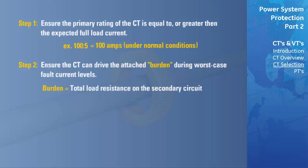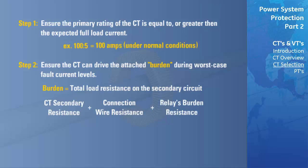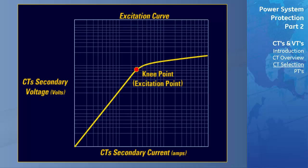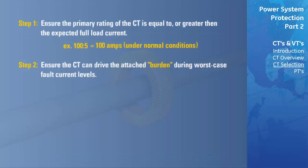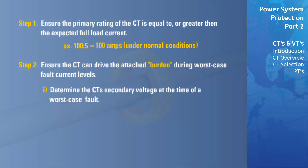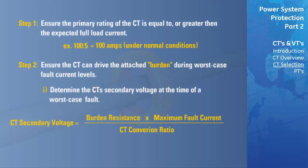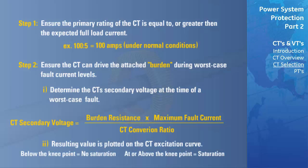The burden refers to the total load resistance of the secondary circuit. The calculation for the burden is the CT secondary resistance — the amount of resistance on the secondary windings — added to the connection wire resistance, added to the relay's burden resistance. A CT becomes saturated when the voltage secondaries reach the knee point of the excitation curve. To determine whether the CT can drive the attached burden under worst case fault conditions without saturating, we must determine the CT's secondary voltage at the time of the fault. The CT secondary voltage at the time of fault equals the burden resistance times the maximum fault current divided by the CT conversion ratio. The resulting value is then plotted onto the CT excitation curve. If the value plotted is below the knee point, the CT will not saturate; if it is equal to or greater than the knee point, the CT will saturate.